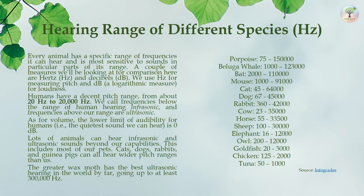Most of our pets — cats, dogs, rabbits, and guinea pigs — can all hear wider pitch ranges than us. The greater wax moth has the best ultrasonic hearing in the world, going up to at least 300,000 Hz. Other hearing ranges: puppies 75–150,000 Hz; beluga whale 1,000–123,000 Hz; bat 2,000–110,000 Hz; mouse 1,000–91,000 Hz; cat 45–64,000 Hz; dog 67–45,000 Hz; rabbit 360–42,000 Hz; horse 55–33,500 Hz; sheep 100–30,000 Hz; elephant 16–12,000 Hz; owl 200–12,000 Hz; goldfish 20–3,000 Hz; chicken 125–2,000 Hz; tuna 50–1,000 Hz.